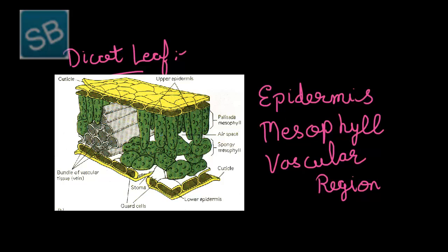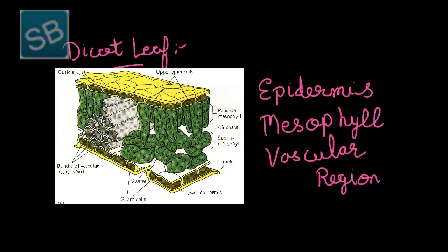Following epidermis, there comes the middle region, that is mesophyll. Mesophyll consists of two types of cells: palisade mesophyll and spongy mesophyll. In between these two layers there occurs air space. In the ground tissue system there occurs a region known as chlorenchyma, which contains two regions. The region present below the upper epidermis is palisade mesophyll, and the region present above the lower epidermis is spongy mesophyll. As two different types of tissues occur in the mesophyll towards the upper and lower epidermis, this organization is also known as bilaterally symmetrical.